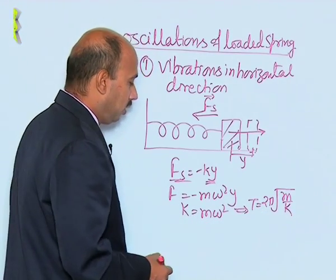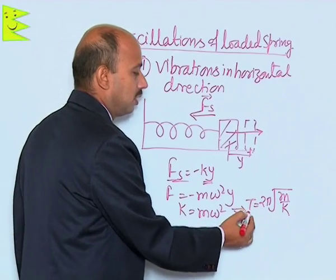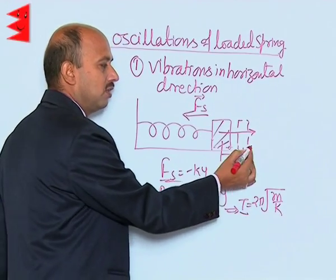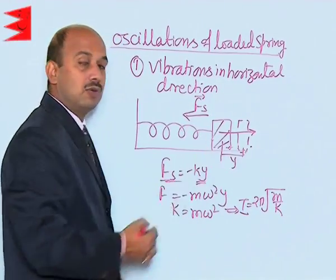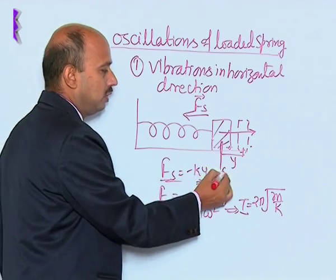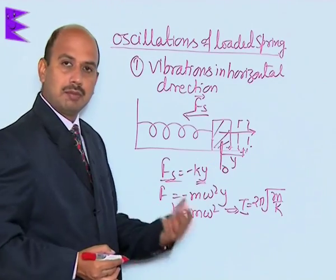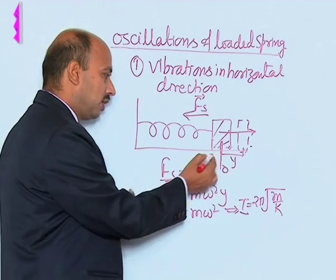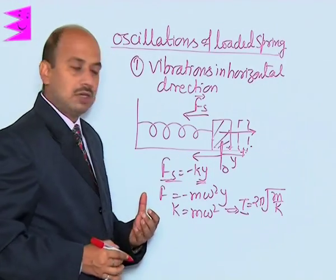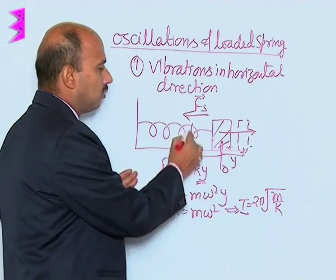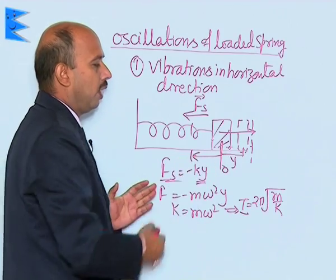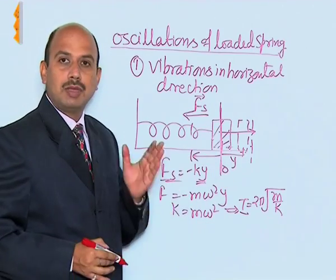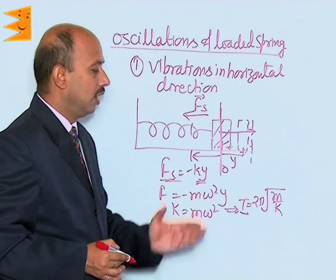So, the time period of this oscillation of the spring — it will go to this side as you release it, it will come back to the mean position or equilibrium position, it will overshoot this mean position and come to this side. So, it will keep on oscillating between these two points, and this fixed position is called the mean position or equilibrium position.